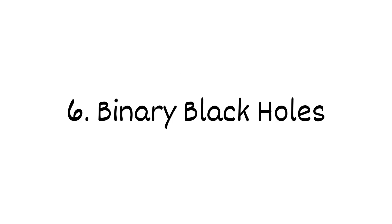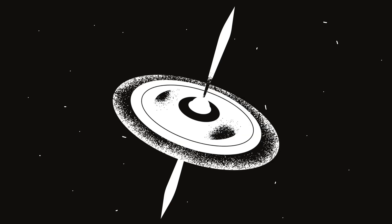Binary black holes. Now picture two black holes orbiting each other. That's what we call a binary black hole. They circle closer and closer over time, spinning faster, twisting the fabric of space around them until they finally collide. That collision sends ripples through spacetime itself, gravitational waves.